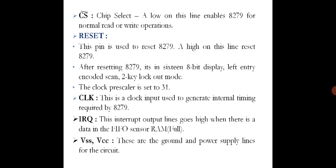The interrupt request output line goes high whenever there is data in the FIFO sensor RAM or when it is full. VSS and VCC represent the ground and power supply lines for the circuits.